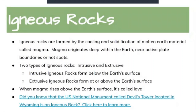Igneous rocks are formed by the cooling and solidification of molten earth material called magma. Magma originates deep within the earth near active plate boundaries or hotspots. There are two types of igneous rocks: intrusive and extrusive. Intrusive igneous rocks form below the earth's surface and cool slowly, allowing minerals to grow large. They tend to have a coarse or rough texture and it takes millions of years for an intrusive rock to solidify.